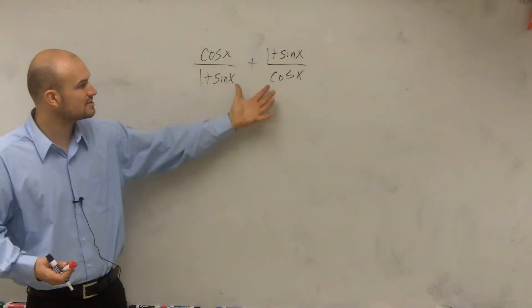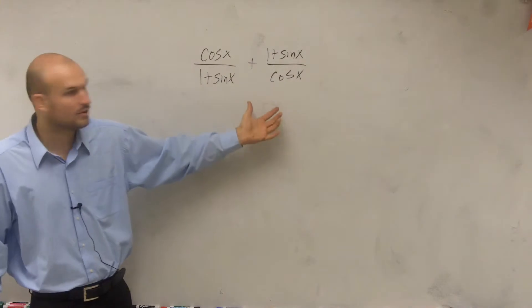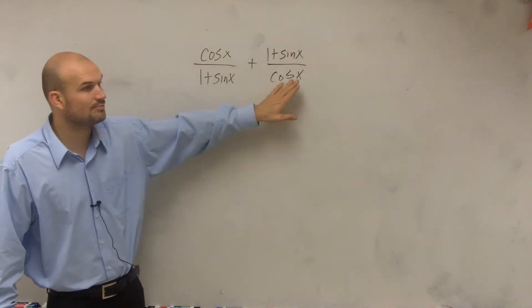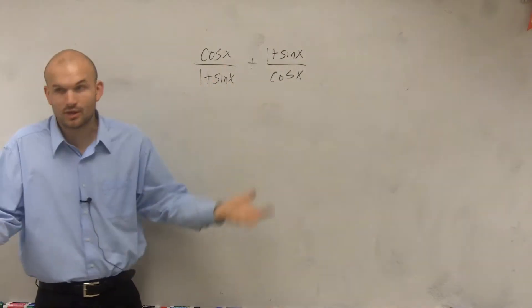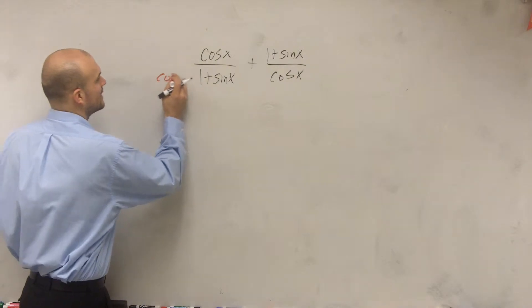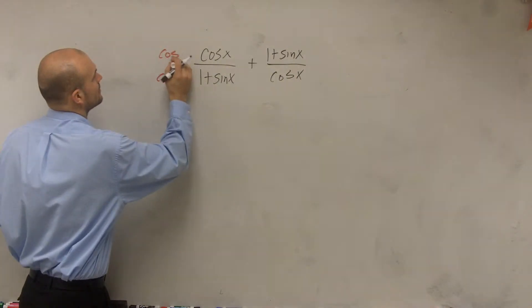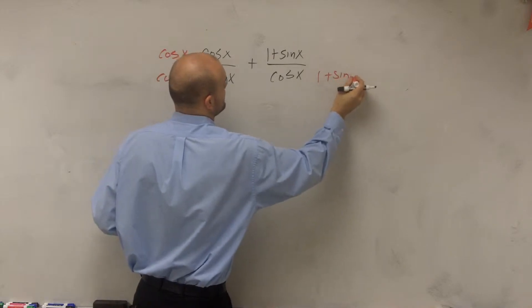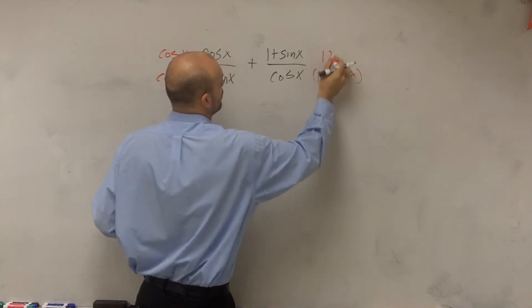So again, just like I did with the numbers, I need to find the least common multiple. Well, it's a little more difficult to find the least common multiple, but what I know is if I multiply each denominator by the other one, I will have a common multiple. So let's multiply this side by cosine of x, and then this side I'm going to multiply by 1 plus sine of x, because that's the whole denominator.